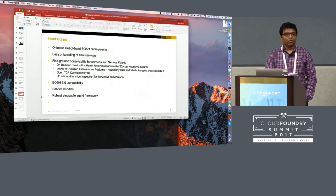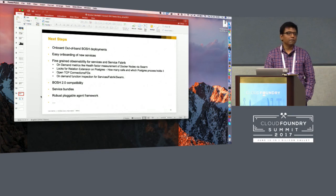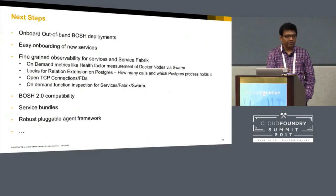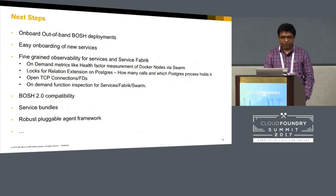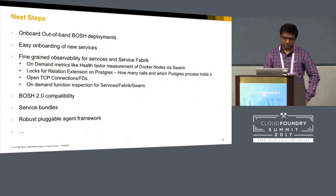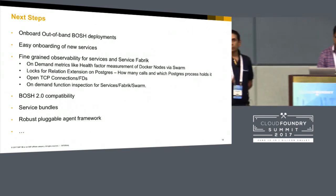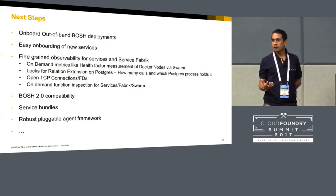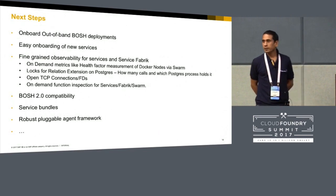Our next step is to make onboarding even easier and to bring in out-of-band BOSH deployments — meaning if you already have a BOSH deployment and want to bring it within the ambit of Service Fabric to get all its advantages, you can do that. BOSH 2.0 compatibility is also on the roadmap. Service bundles are another idea — multiple services that can talk to each other. Today Cloud Foundry has app-to-service binding but misses the notion of service-to-service binding, and that's what we're aiming to address.